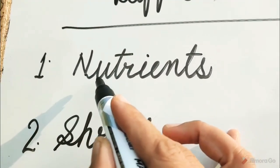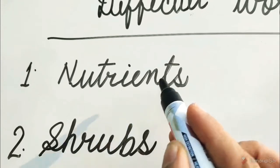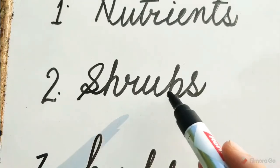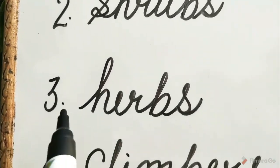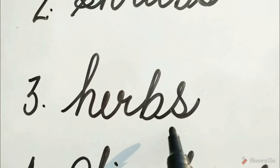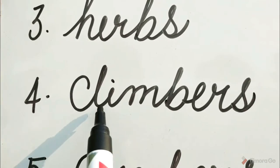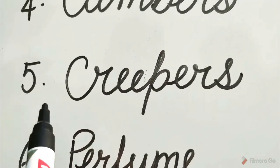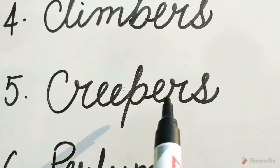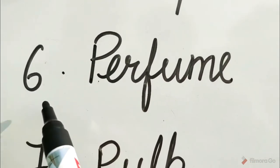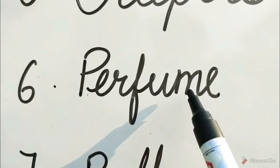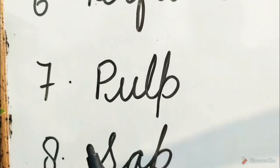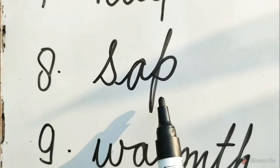Number 1: N-U-T-R-I-E-N-T-S, nutrients. Number 2: S-H-R-U-B-S, shrubs. Number 3: H-E-R-B-S, herbs. Number 4: C-L-I-M-B-E-R-S, climbers. Number 5: C-R-E-E-P-E-R-S, creepers. Number 6: P-E-R-F-U-M-E, perfume. Number 7: P-U-L-P, pulp. Number 8: S-A-P, sap.